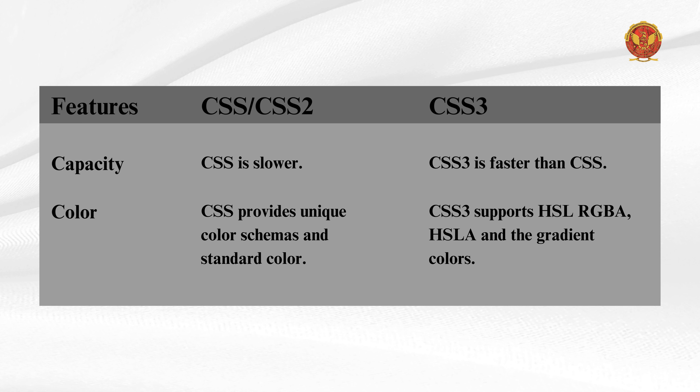If we talk about capacity, CSS2 is slower than CSS3. Regarding color, CSS2 provides unique color schemes and standard colors. CSS3 also provides colors, but additionally supports HSL (Hue, Saturation, and Lightness), RGBA (Red, Green, Blue and Alpha Channel), HSLA (Hue, Saturation, Lightness and Alpha Channel), and gradient colors.